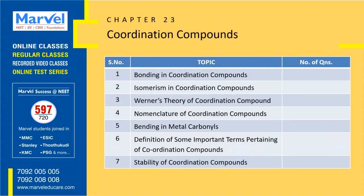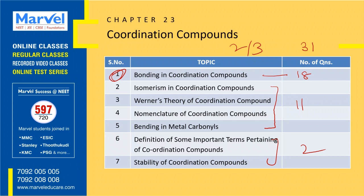Next: Coordination Compounds — you can expect 2 or 3 questions. The first topic alone has 18 questions. The next 4 topics have 11 questions, and the last 2 topics have 2 questions. This is one of the maximum weightage chapters in 12th standard chemistry. If you are strong in all 7 concepts, you will definitely score 12 marks.